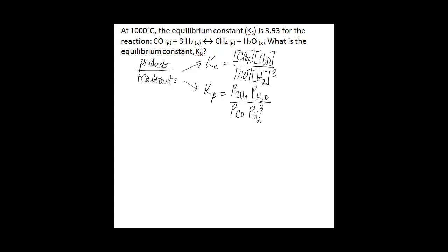So what we're doing for this problem is converting directly between Kc and Kp. We don't actually have to know the concentrations in moles per liter to find Kp — we have Kc and we go directly to Kp from there. We also don't know the partial pressures of any of the gases. The important equation to know here is Kp is equal to Kc times RT raised to the delta N. This equation shows the direct relationship between Kp and Kc.